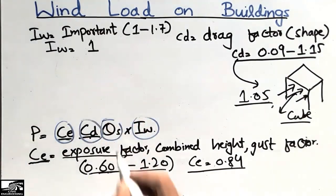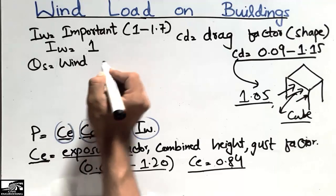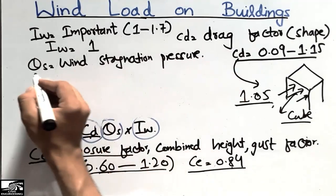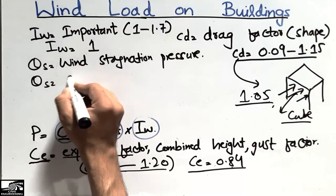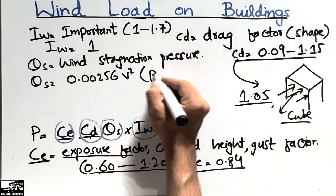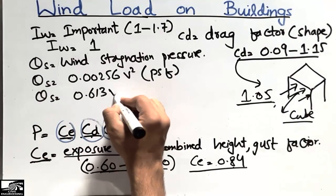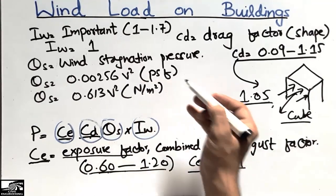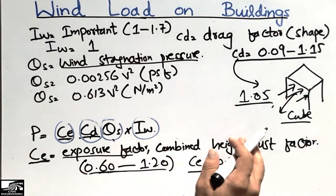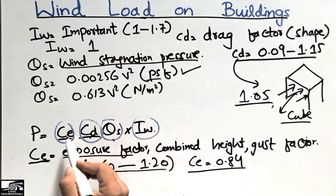The QS factor is the wind stagnation pressure. The American Society gives the formula: QS = 0.00256 × V² in units of pounds per square foot (PSF), or QS = 0.613 × V² in Newtons per square meter. You can use either equation. Since we are working in foot-pound units, we will use the first equation.